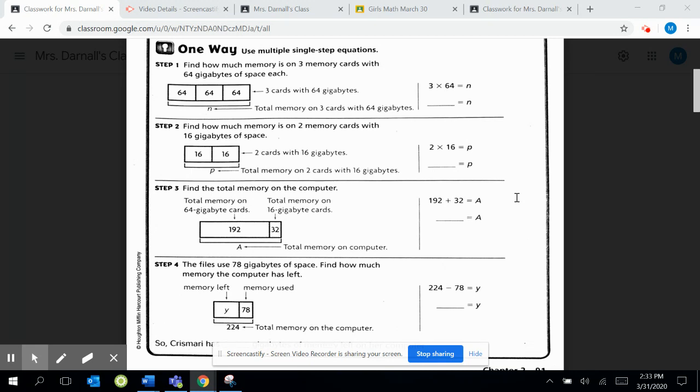You should be on 91, and let's go ahead and read that story problem together. It says, Chris Murray's computer has three memory cards with 64 gigabytes of space each, and two memory cards with 16 gigabytes of space each. The files on her computer use 78 gigabytes of space. How much memory does her computer have left?